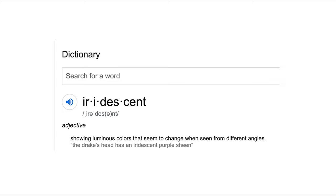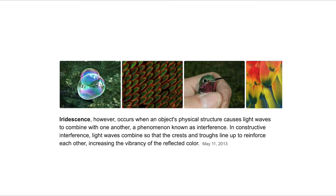First, the definition of iridescent: it's an adjective that says it shows luminous colors that seem to change when seen from different angles. It occurs when the physical structure causes light waves to combine with one another. So that means that light waves clash against each other, and the color will be reflected differently - sometimes green, red, purple, blue, depending on how you look at it.